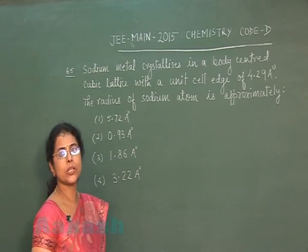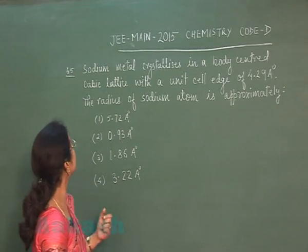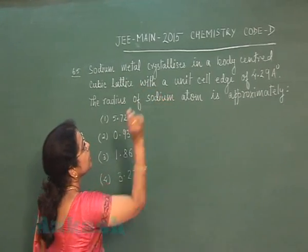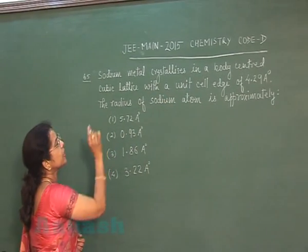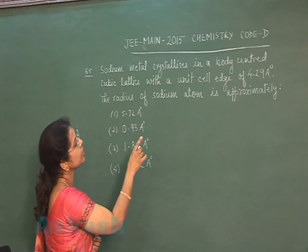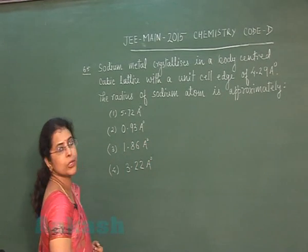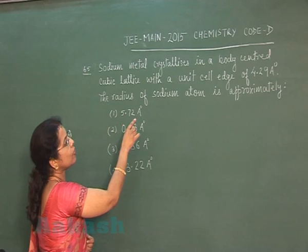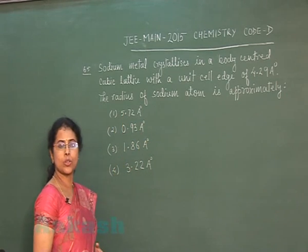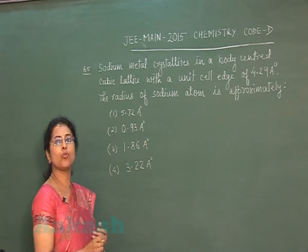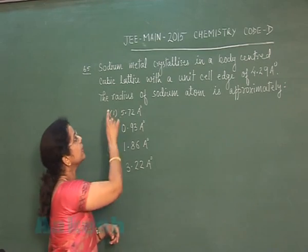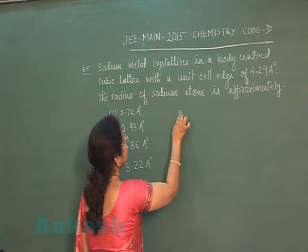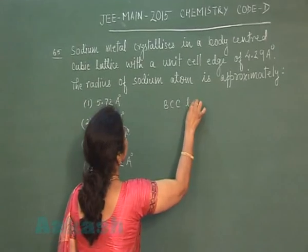Next question is question number 65. Sodium metal crystallizes in a body-centered cubic lattice with a unit cell edge of 4.29 Angstrom. The radius of the sodium atom is approximately... This is a formula-based question. The type of lattice given in the question is a BCC lattice.